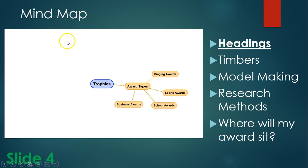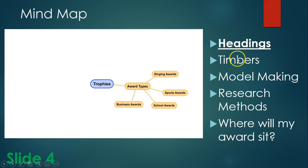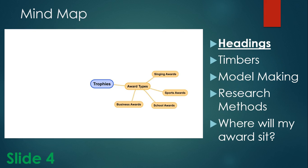The next slide, slide four, is a mind map. I did this in Simple Minds on the iPad. I put 'trophies' in the middle. I have headings for award types — singing awards, sports awards, school awards, and business awards — and four more headings: timbers, model making, research methods, and where will my trophy sit. For example, under timbers I could list as many timbers as possible. Under model making I would say what I'd use — cardboard, scissors, glue, sellotape. Research methods could be the internet, books, or magazines.